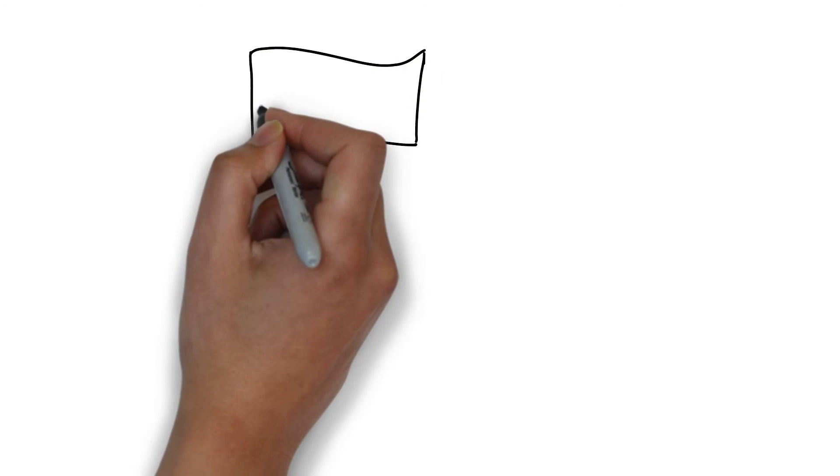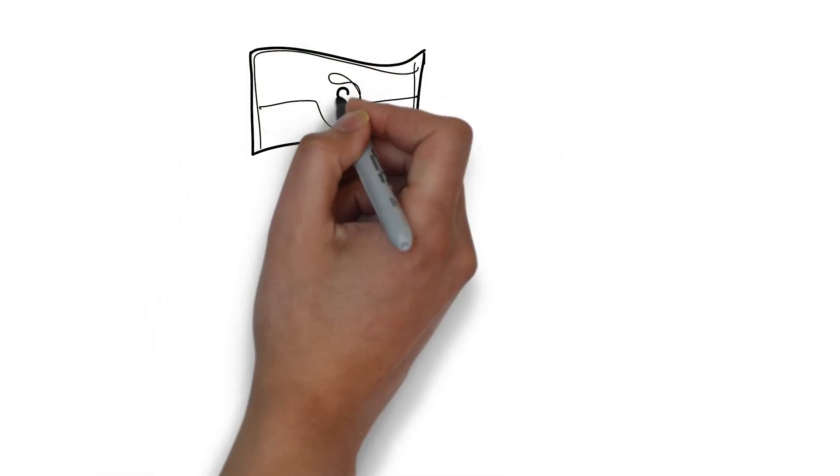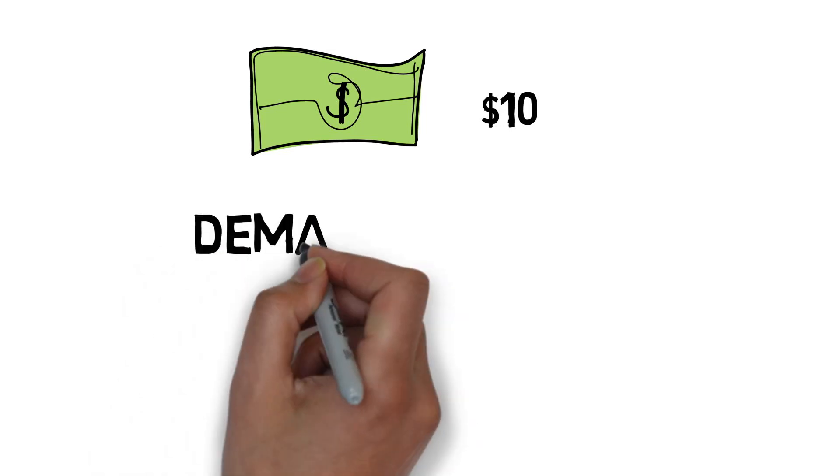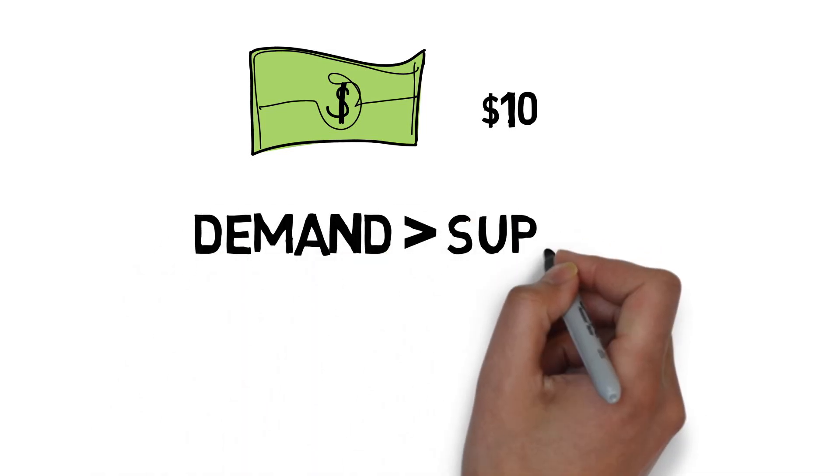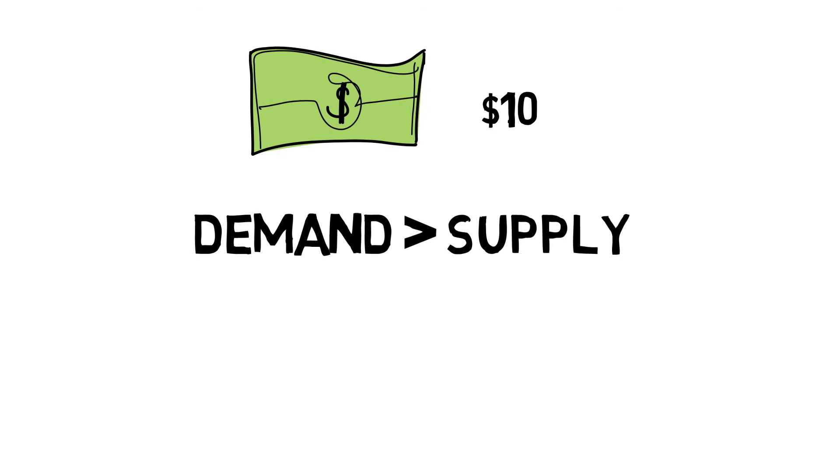Why does the share price fluctuate? It is well explained by the basic economic principle of supply and demand. When there are a lot of buyers and less number of shares available for sale, share price increases and vice versa.